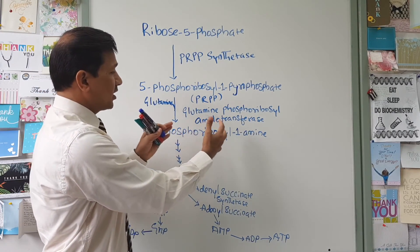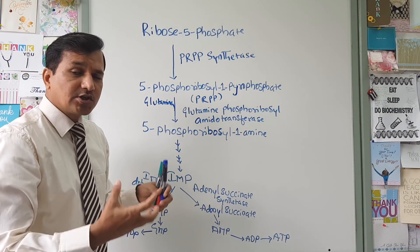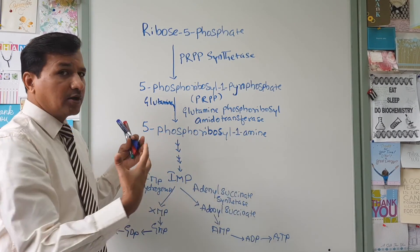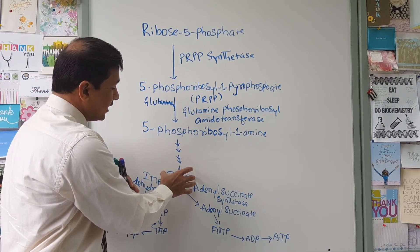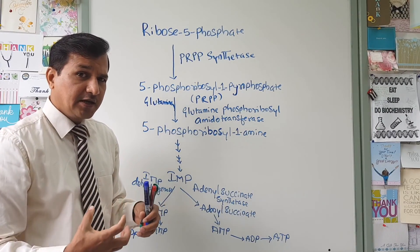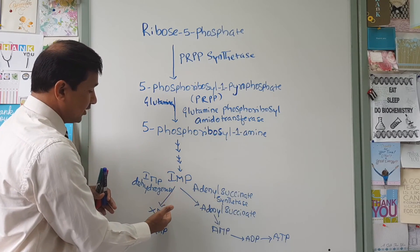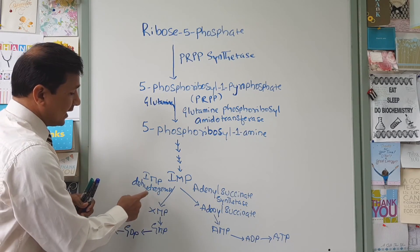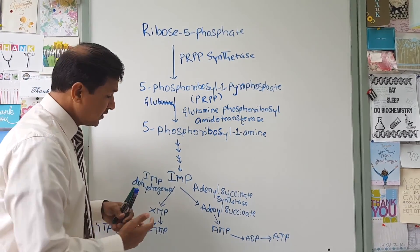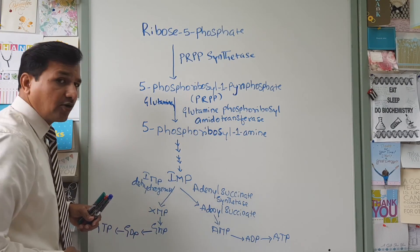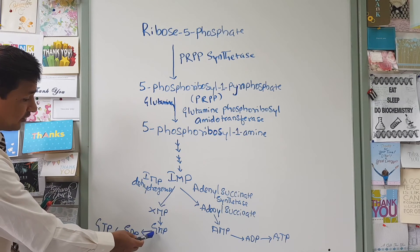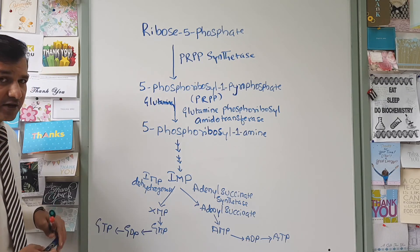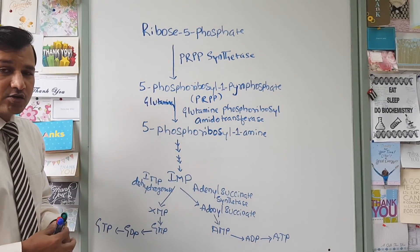Once you get 5-phosphoribosyl-1-amine, the other metabolic intermediates contributing to each atom of the purine base enter the reaction. Multiple reactions occur and you get IMP — inosine monophosphate. IMP is at the crossroads: it can go into XMP (xanthosine monophosphate) formation via IMP dehydrogenase, and XMP can be converted to GMP, then to GDP, and then to GTP.